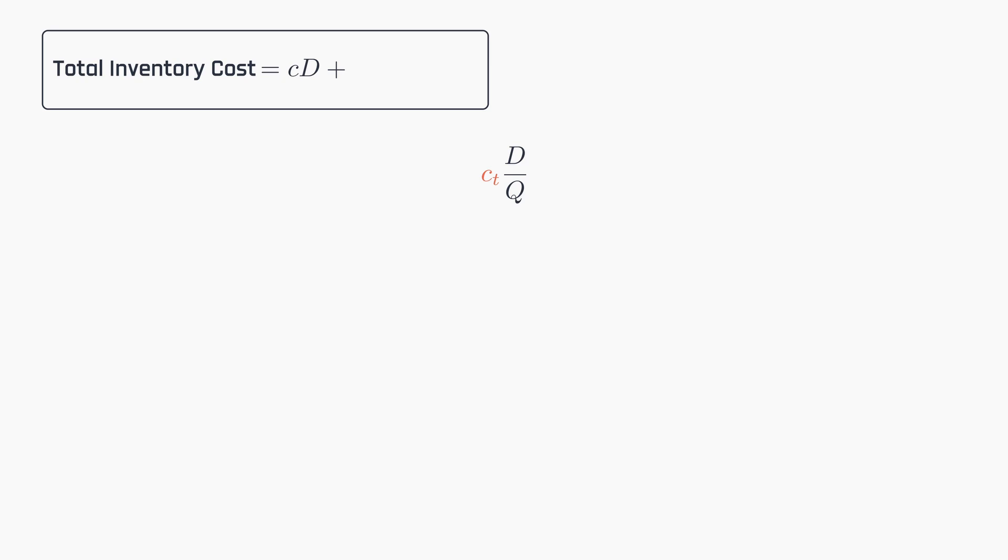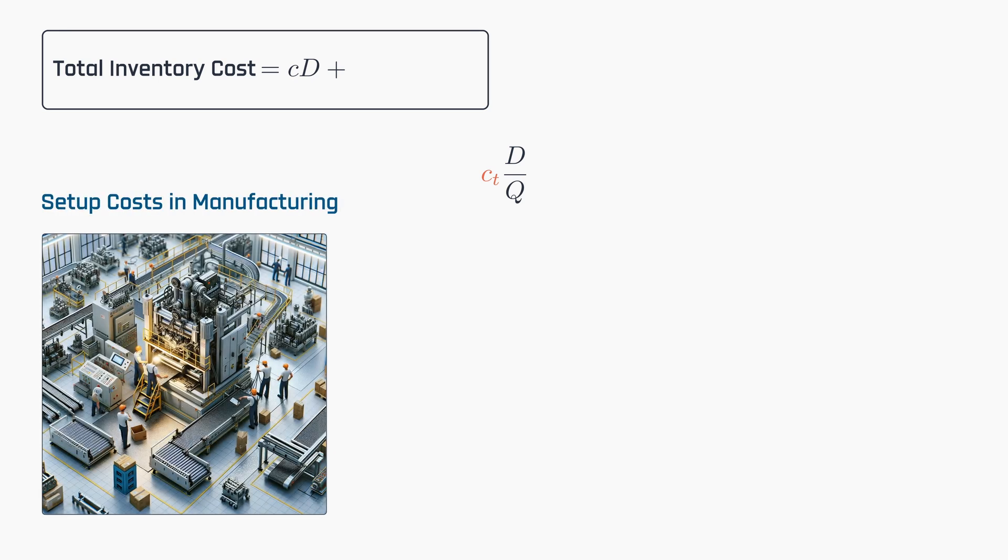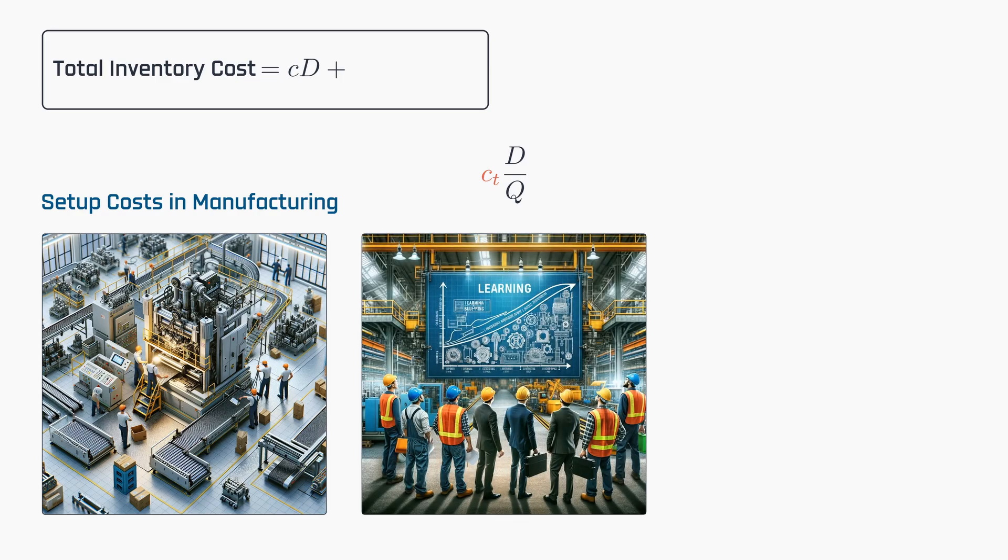Now, in the context of manufacturing, fixed setup costs can also be multifaceted. For instance, the labor required for machine setup is a critical factor in the early stages of production runs. Reduced efficiency and quality often characterize the learning period for new production setups, representing another significant cost component.